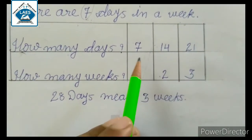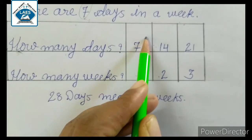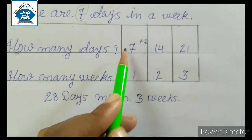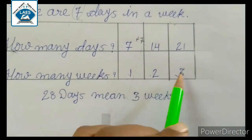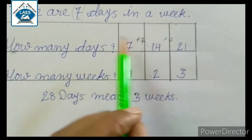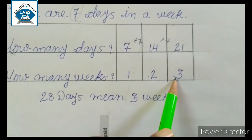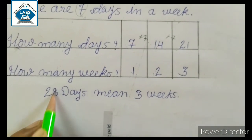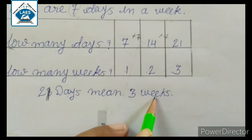Aise bhi hum kar sakte hain. Otherwise hum kya kar sakte hain? Seven hai, usme hum same number plus karte jaenge: seven plus seven equals fourteen. Seven days hai to one week, fourteen days hai to two weeks. Weeks mein number increase karte jaenge aur yahan plus seven karte jaenge. Seven ke table se bhi kar sakte hain. Twenty-one, seven ke table mein kahan aata hai? Three time aata hai. So twenty-one days mean three weeks.